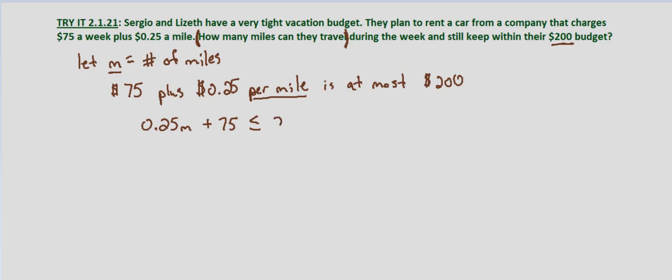Now we just solve as we normally would. We subtract 75 from both sides, and we get 0.25 times the number of miles is less than or equal to 125.